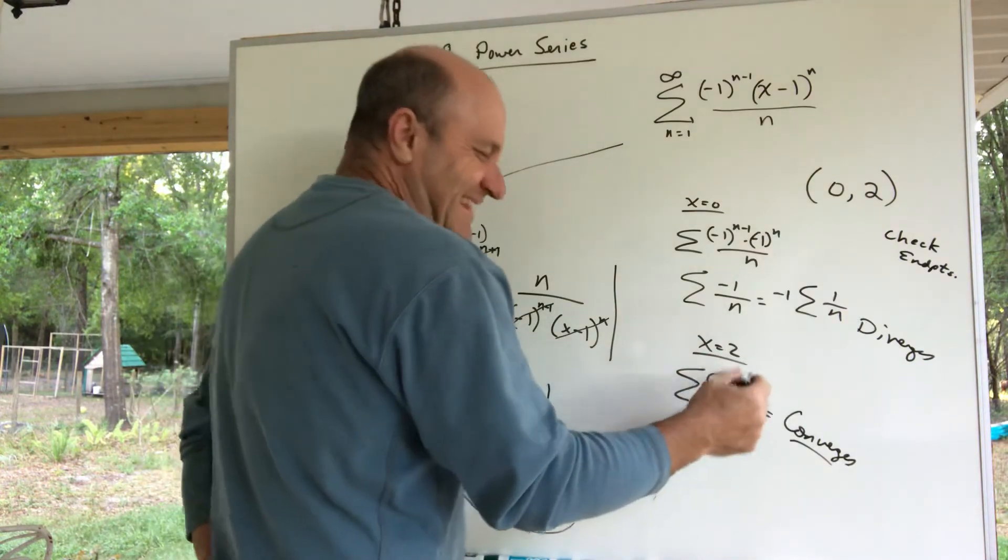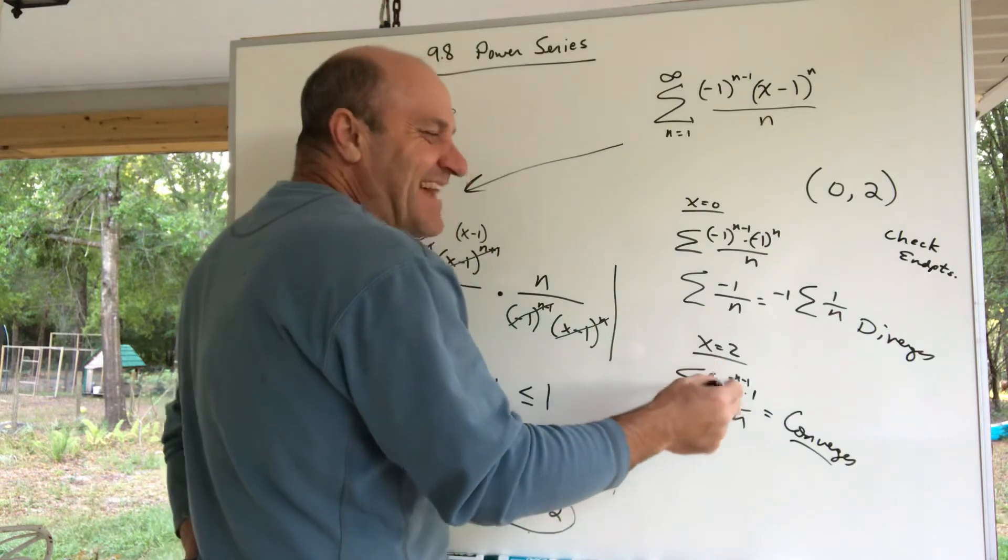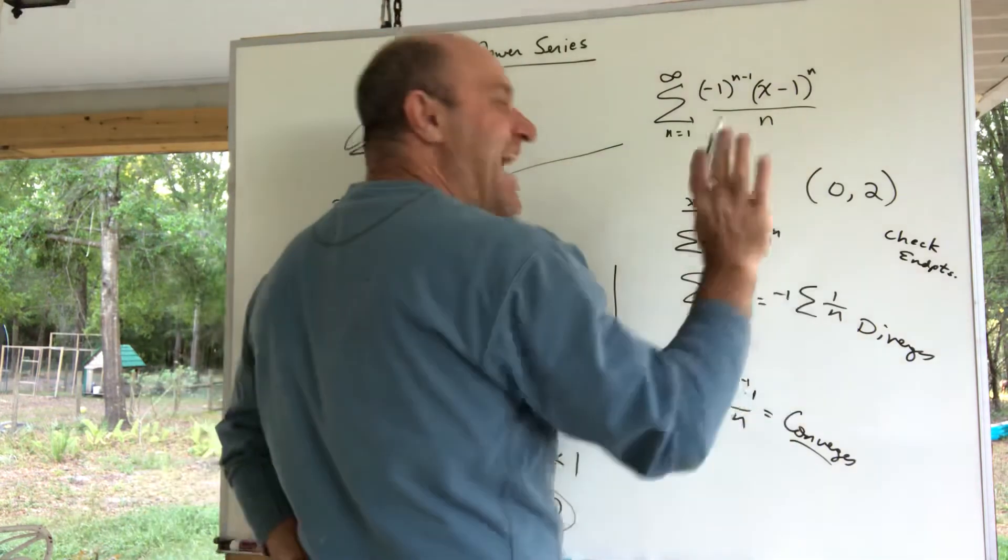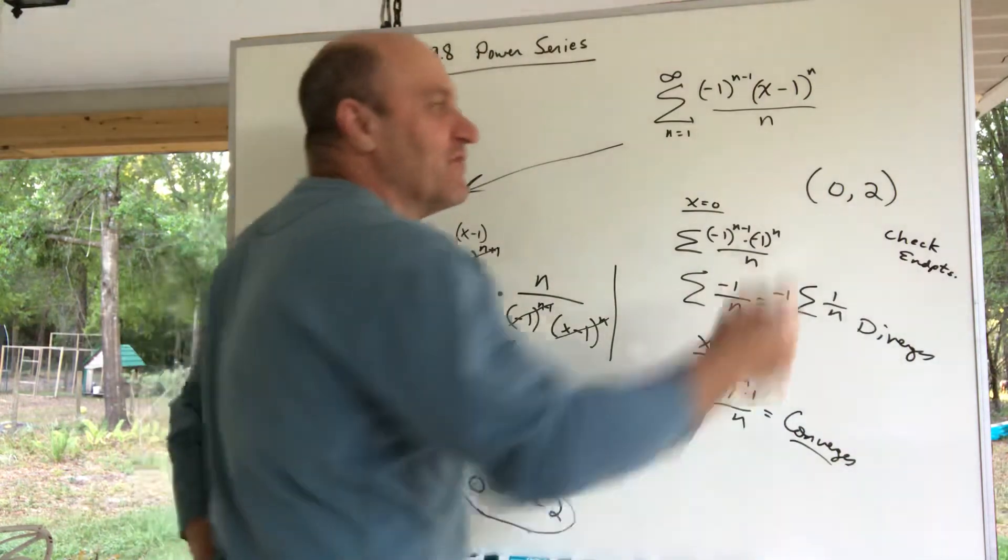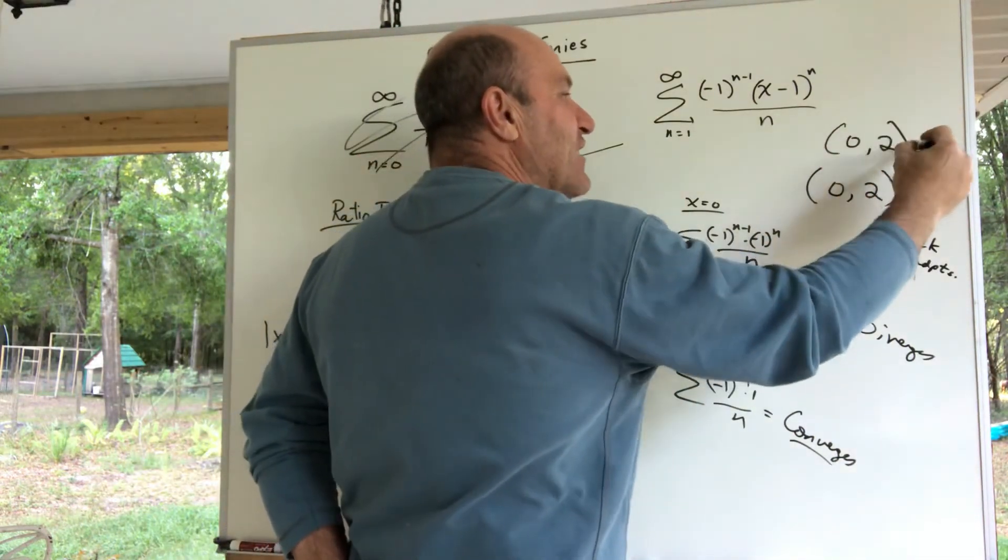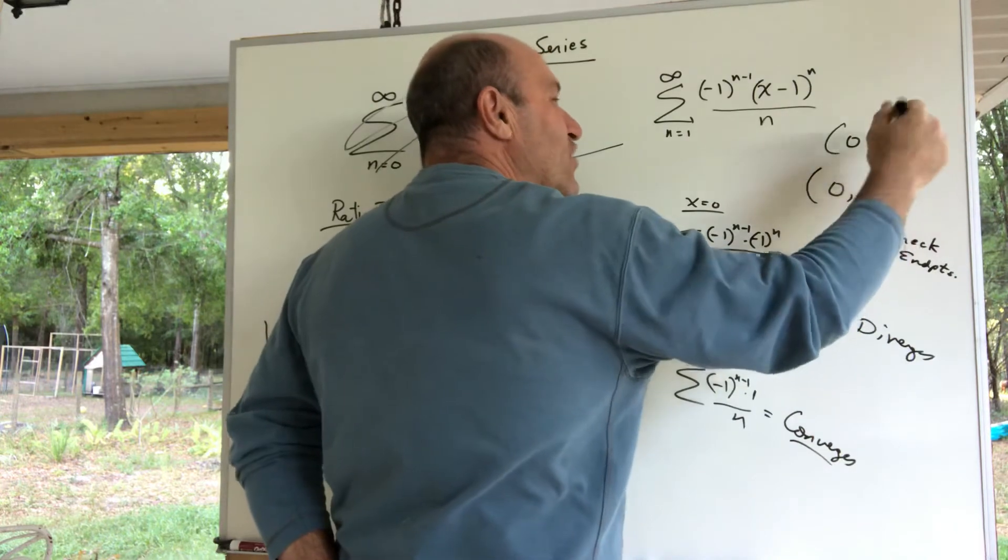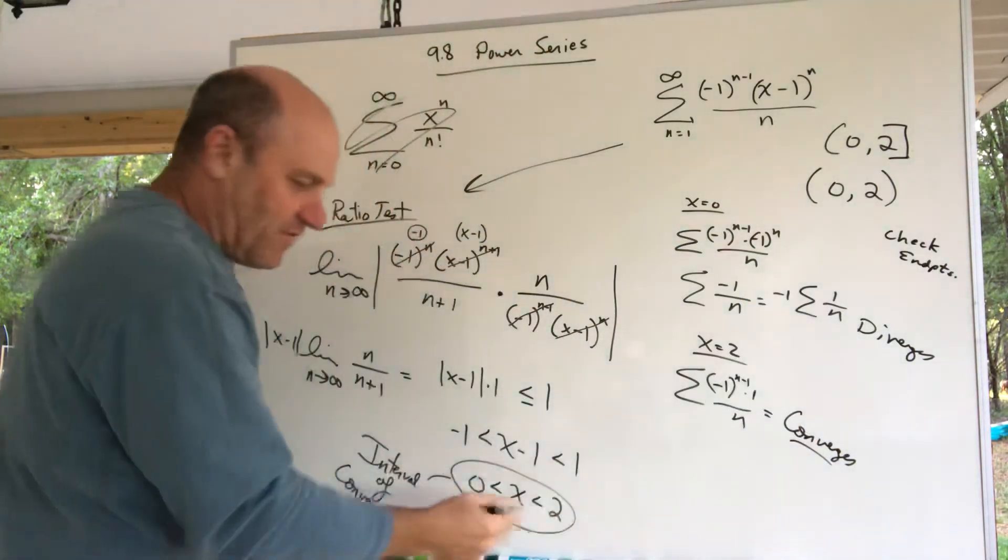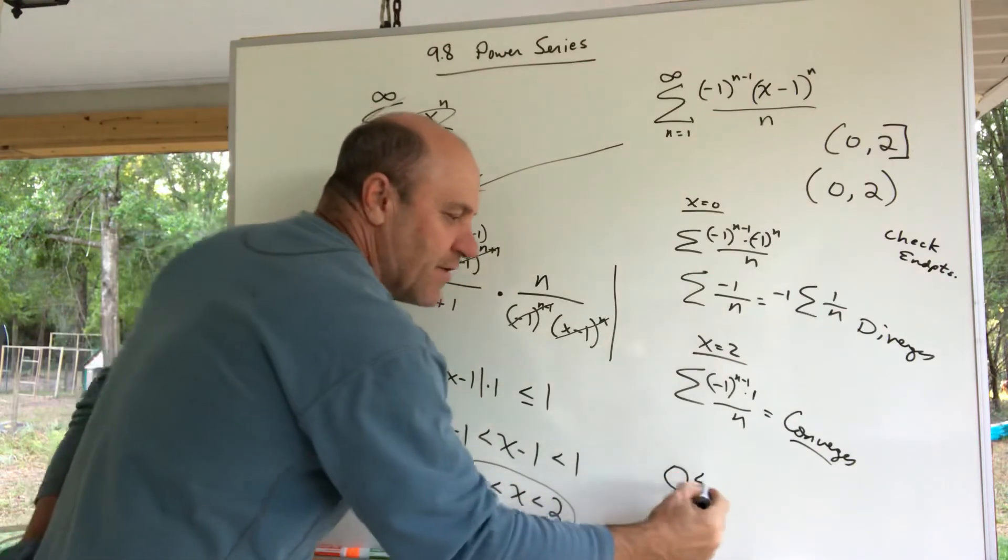So I check the endpoints. The zero diverged, the two converged. The actual interval of convergence is zero to two, and it includes the two. The actual interval of convergence is 0 less than x, which is less than or equal to 2.